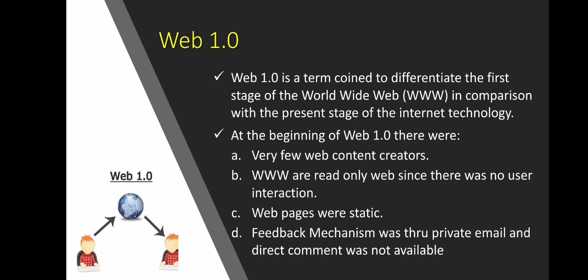Web 1.0 is a term used to distinguish the first stage of the WWW, or the World Wide Web, from the current stage of Internet technology. At the beginning of Web 1.0, there were very few web content creators, and the WWW was a read-only web since there was no user interaction.